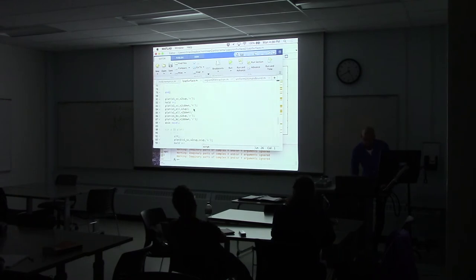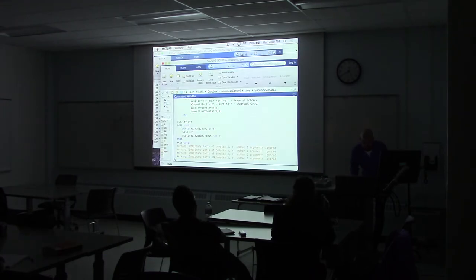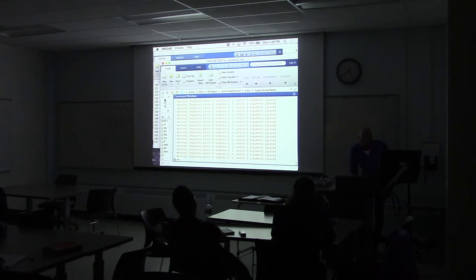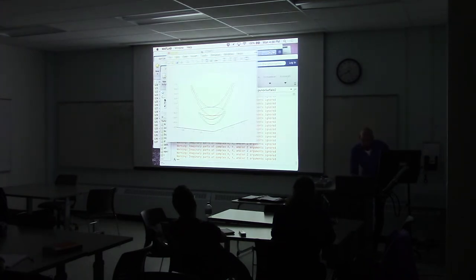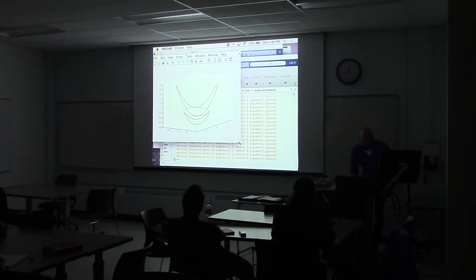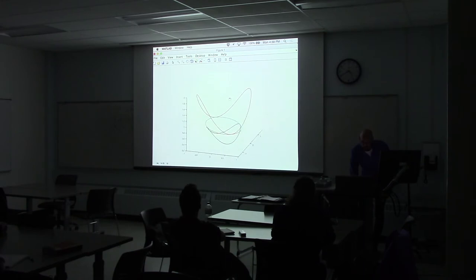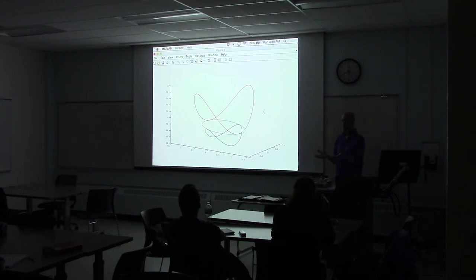So let's kind of visualize this in three dimensions. So when we do V of x, V of x is like a bowl shape. So each value, each constant value of V is an ellipse going around the bowl.